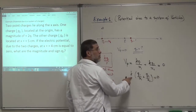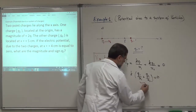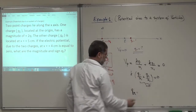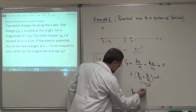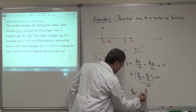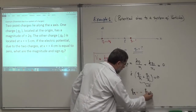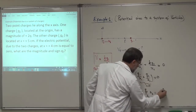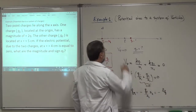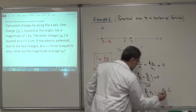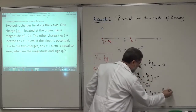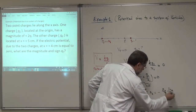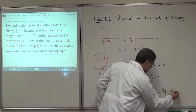Since K is not zero, it means Q1 over X1 plus Q2 over X2 has to be equal to zero. From there, we get Q2. Q2 will be minus Q1 over X1 times X2. Let's put the numbers: minus Q1, which is 2Q, times X2 which is 1 centimeter, over X1 which is 4 centimeters. Of course centimeters will cancel.